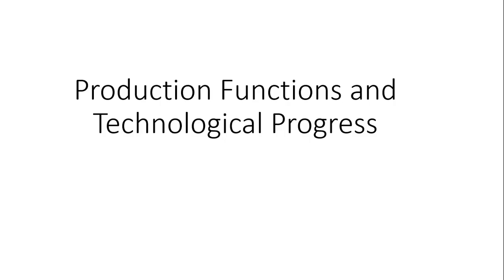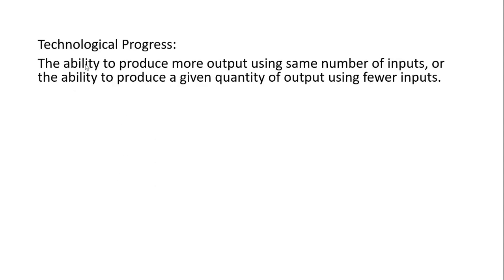In this video, we're going to look at production functions and technological progress. What is technological progress? It is the ability to produce more output using the same number of inputs, or the ability to produce a given level of output using fewer inputs.